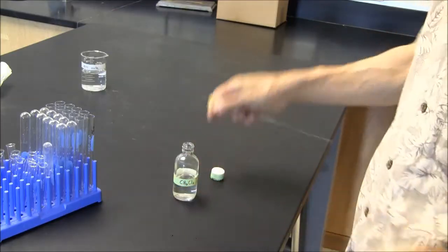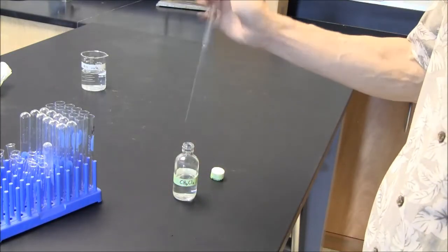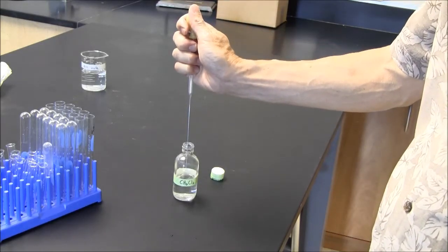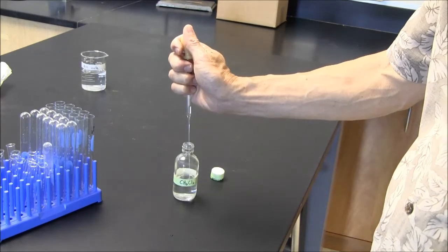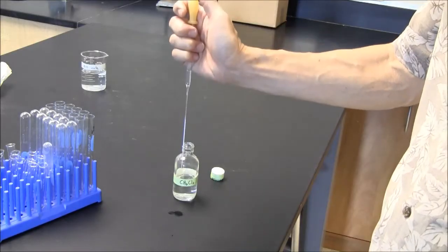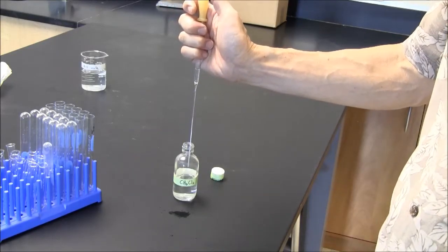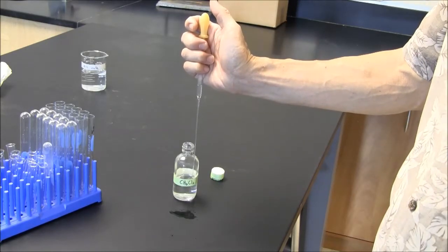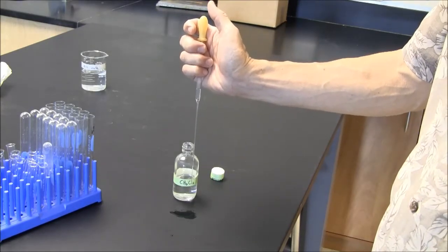So when you're pipetting dichloromethane, notice I've got two fingers on the pipette this time—a little different style than last time. Often, if you do this, you can see it just drips out. And it's because my body heat is warming the vapors in the pipette and producing pressure that forces the liquid out.